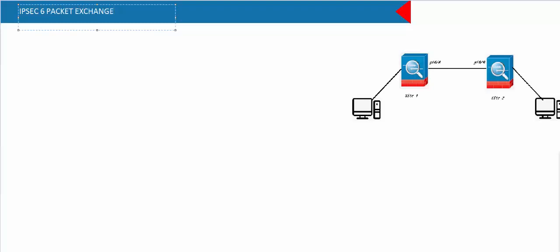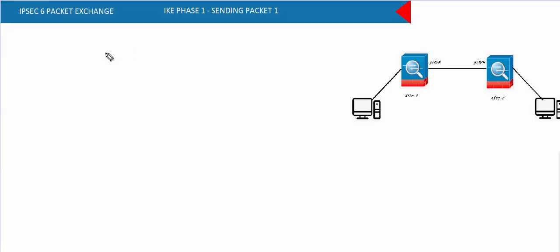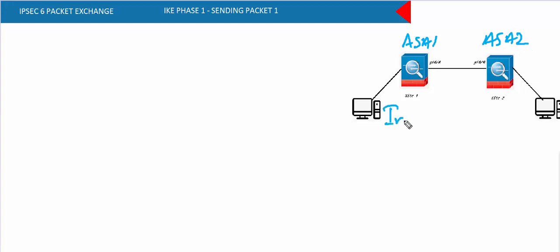Welcome back. In today's tutorial we will see what happens when the initiator sends the first message of the IKE exchange — what information is shared in that first packet. In this setup we have two ASAs.